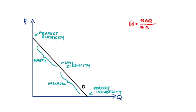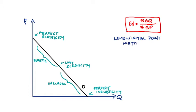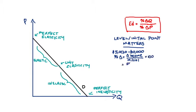Since elasticity is all about percentage changes, I'm going to consider a general property of percentages: the initial value, or the level that we start at, matters. For instance, let's say I was earning five thousand dollars a year and I received a five thousand dollar raise, so my new income becomes ten thousand dollars per year. The percentage change in income is the change divided by the initial level — five thousand divided by five thousand, multiplied by 100 — which is 100 percent.